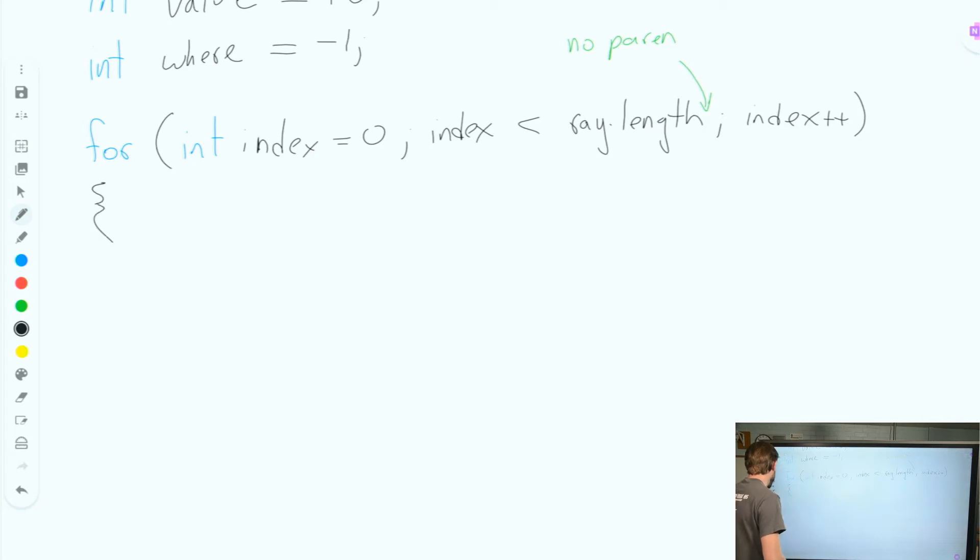Here's my curly braces, my opening curly brace. We're going to write a quick if statement. So we're going to say if, we want to say each index, we're going to go through and search each little square within array.